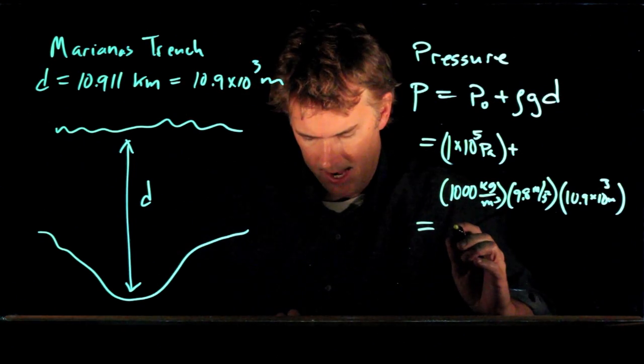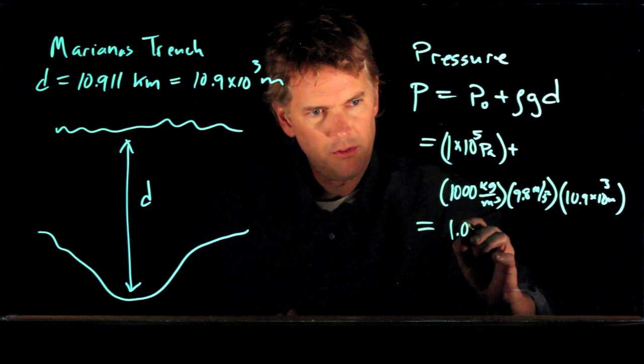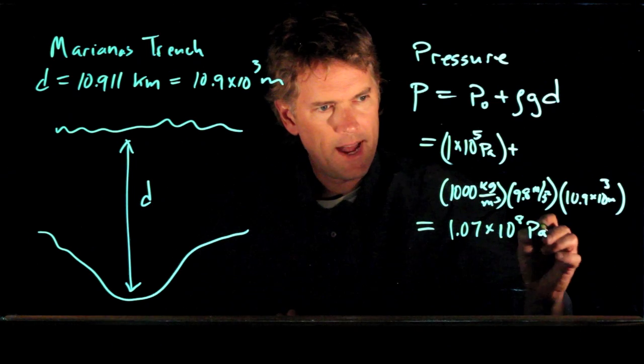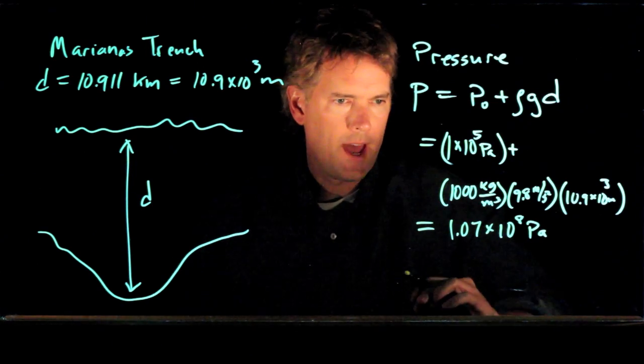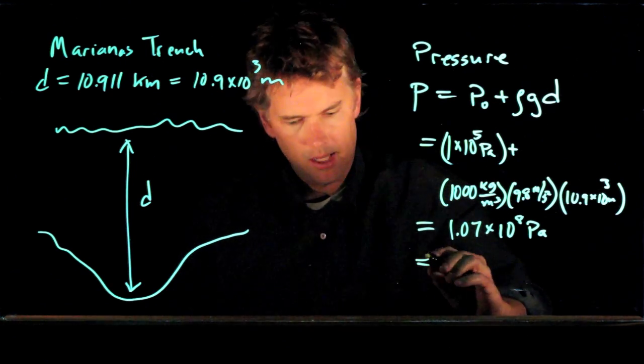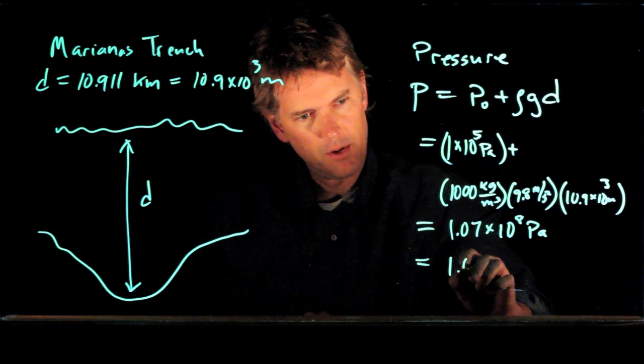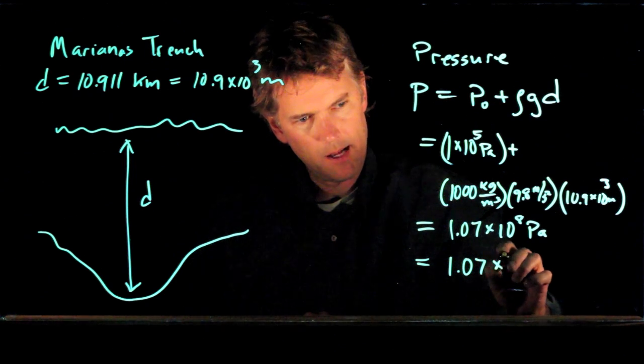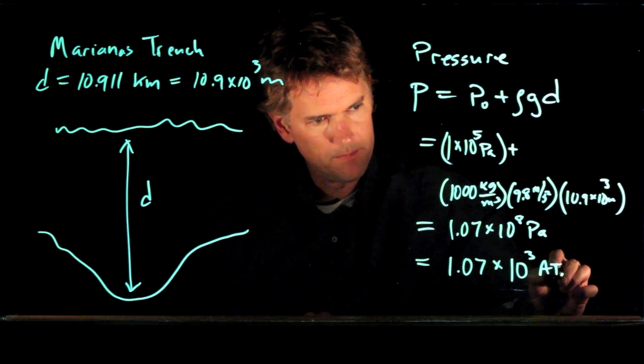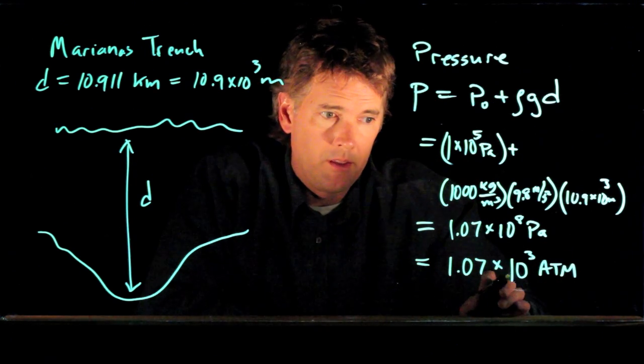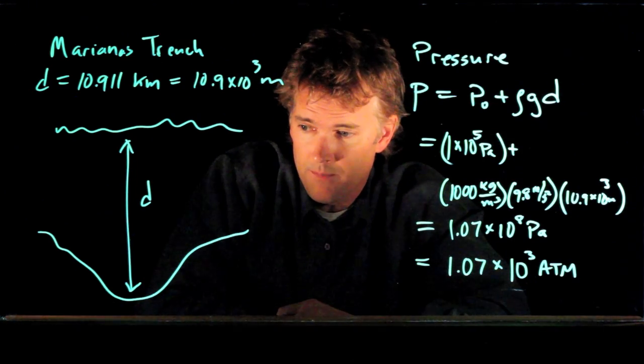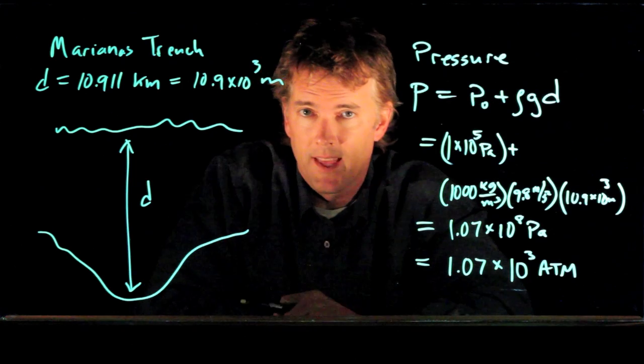And double check me, but I got 1.07 times 10 to the 8 pascals, or 1.07 times 10 to the 3 atmospheres. That's 1,000 atmospheres. So how much pressure is down there? 1,000 times the pressure at the surface.